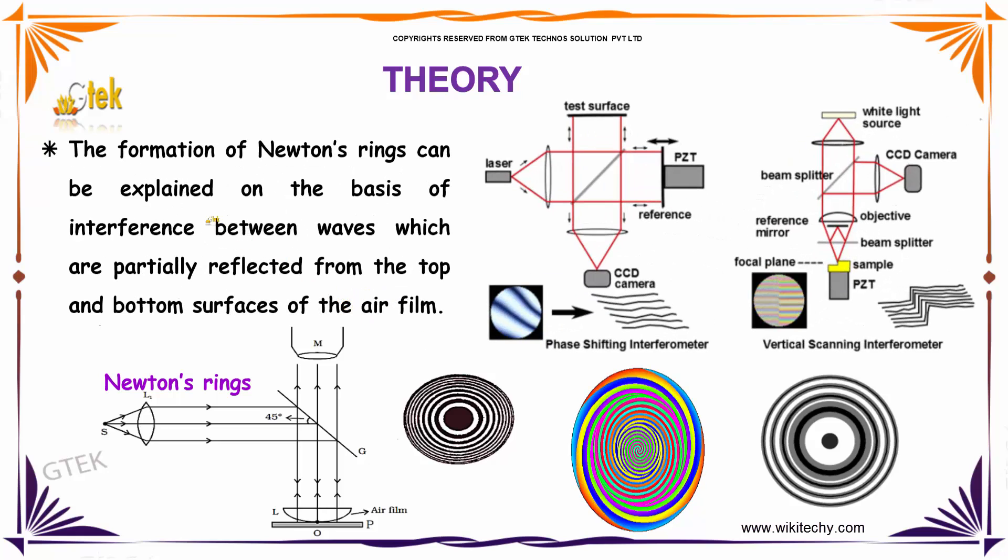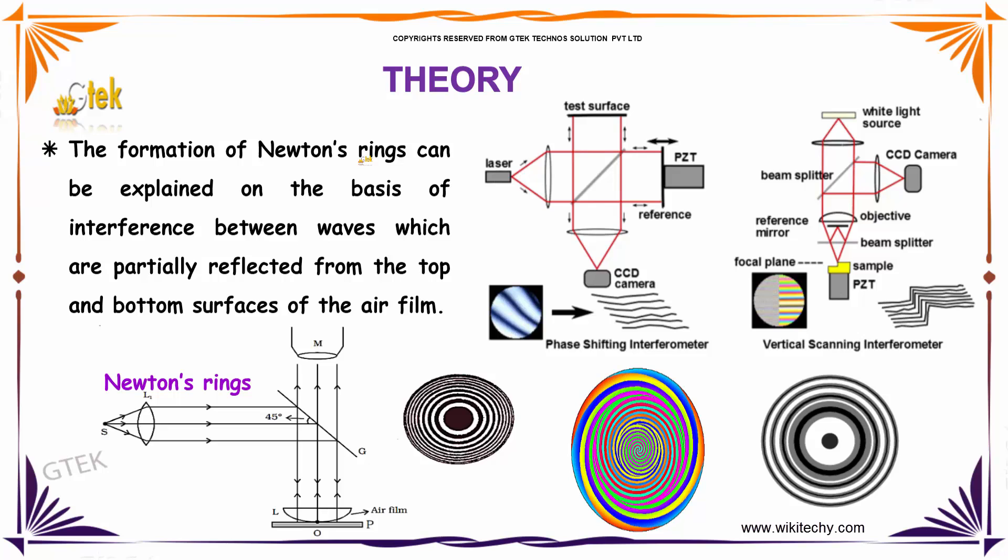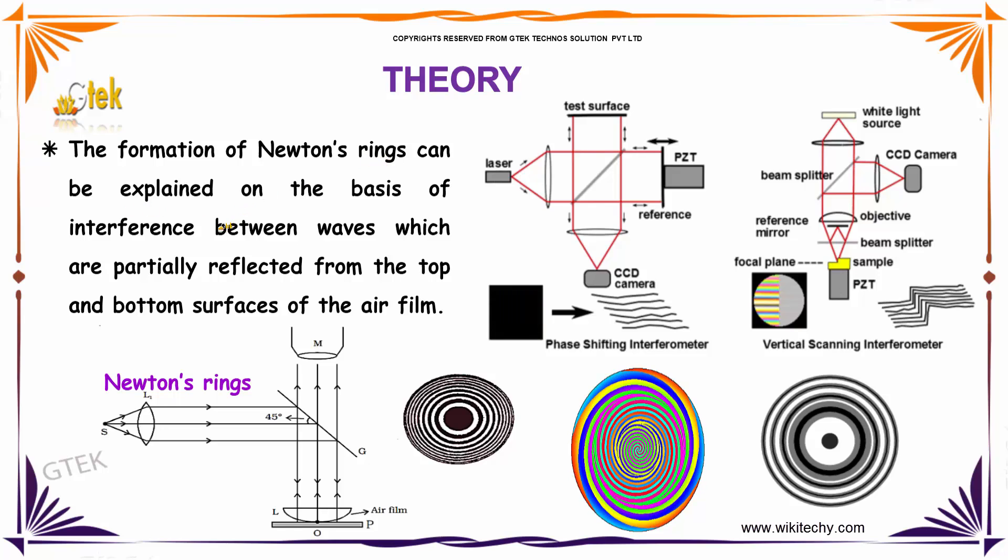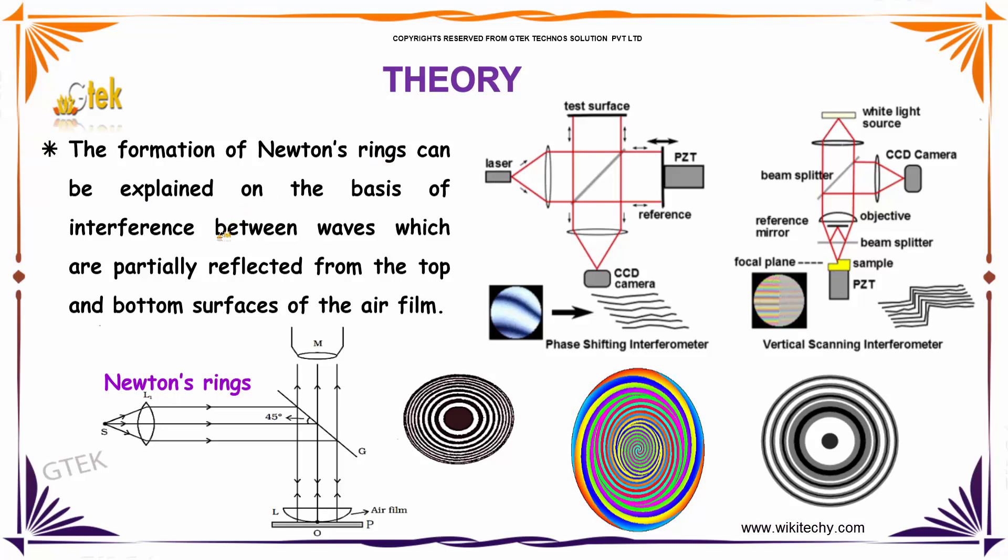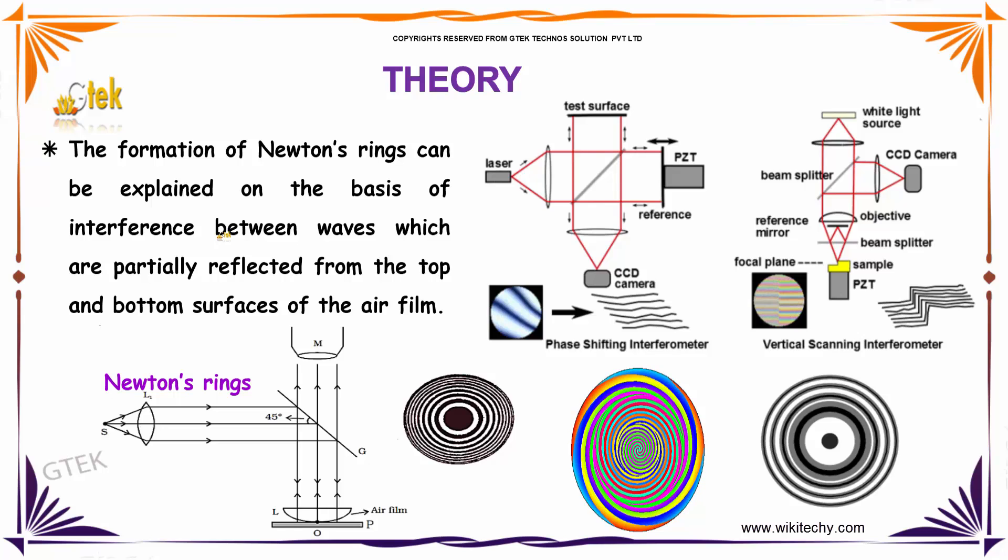Let's see the theory of Newton's rings. The formation of Newton's rings can be explained on the basis of interference between waves which are partially reflected from the top and bottom surfaces of the air film.